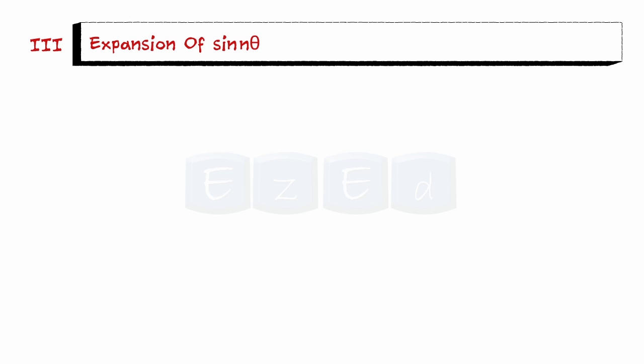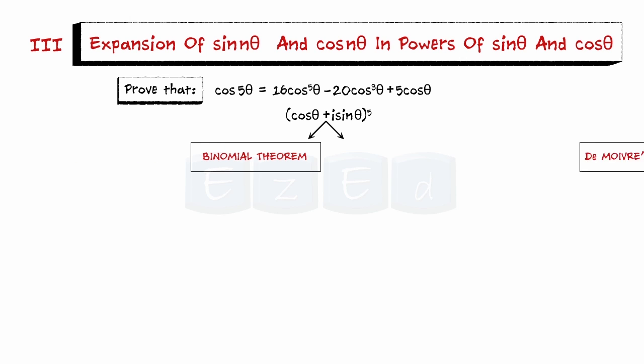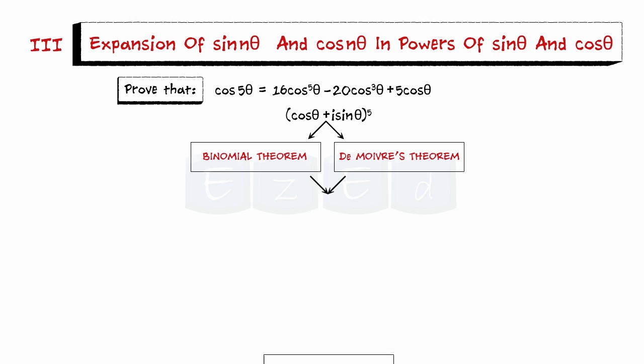Now let us see how De Moivre's theorem helps in expanding sine n theta and cosine n theta in powers of sine theta and cosine theta. Let us see this with an example. Suppose we want to prove that cosine of 5 theta equals 16 cosine to the power 5 theta minus 20 cosine cubed theta plus 5 cosine theta. The idea is to write the expression in two different ways using both the binomial theorem and De Moivre's theorem and compare the results.